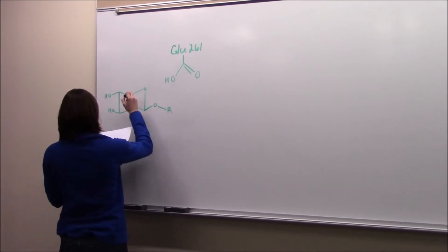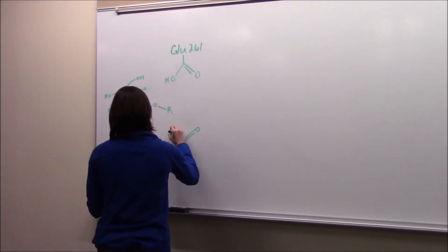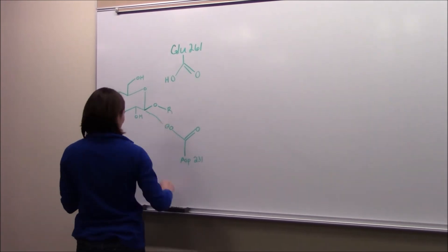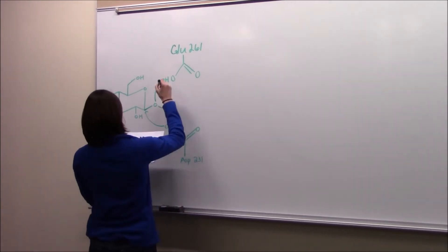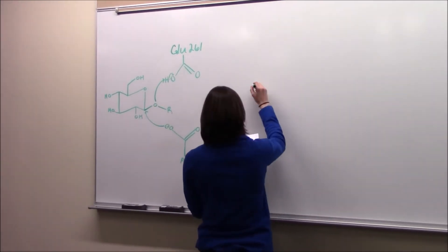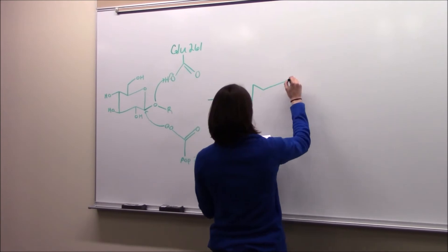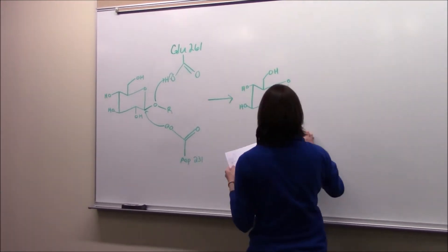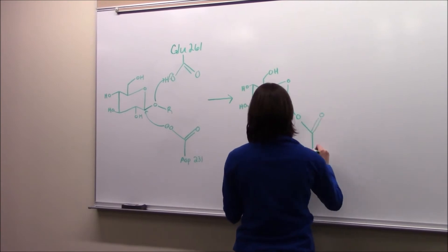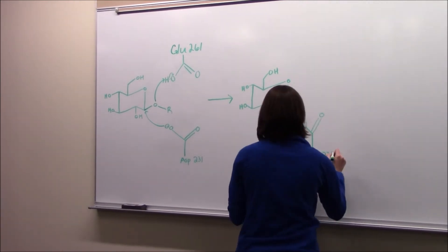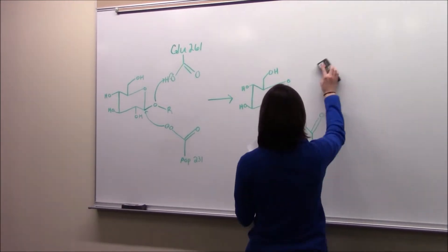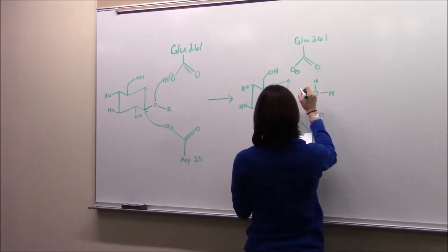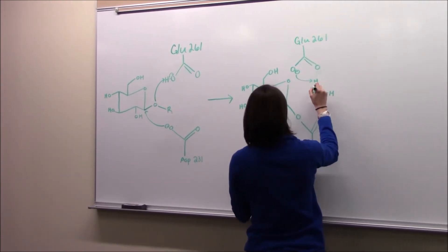Alpha-amylase catalyzes the hydrolysis of alpha-1,4-glycosidic linkages while retaining the configuration of the starch. To break down the glycosidic linkages, covalent catalysis and general acid catalysis take place. During the breakdown, the proton donor is within range to hydrogen bond with the glycosidic oxygen, and because amylase is a configuration-retaining enzyme, the catalytic base stays in close proximity to the anomeric carbon.